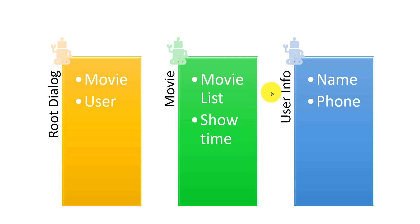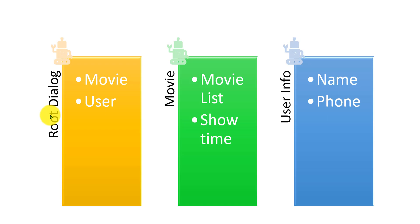So one dialog handles movies and the other handles user information. There will be one parent or root dialog, which tracks movie information first and then user information. So there are three dialogs in the component: root dialog, movie dialog, and info dialog.